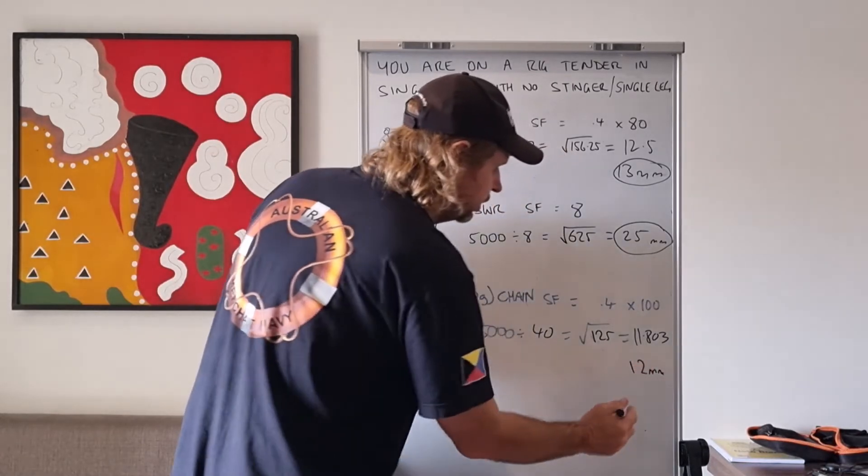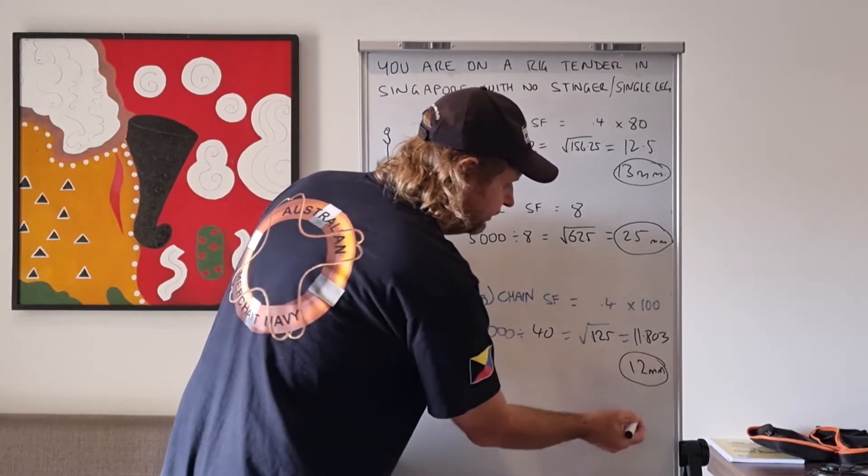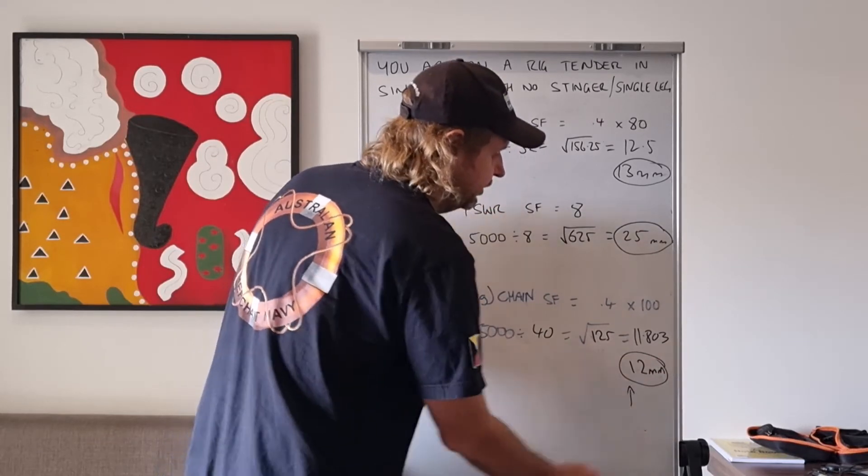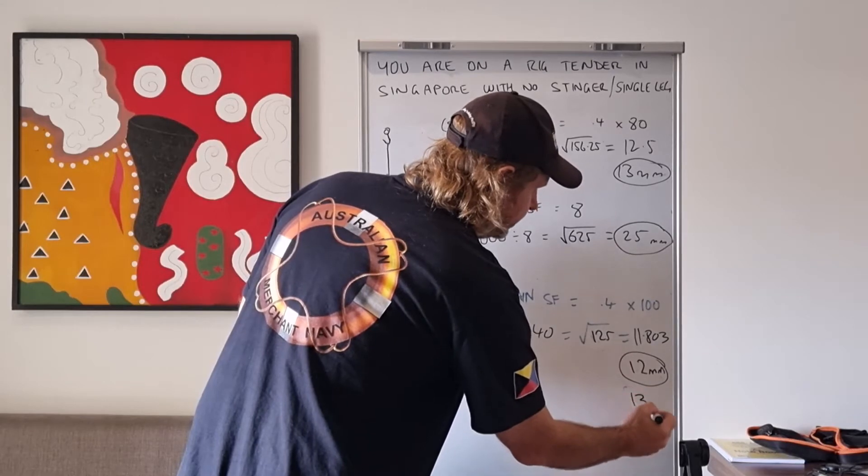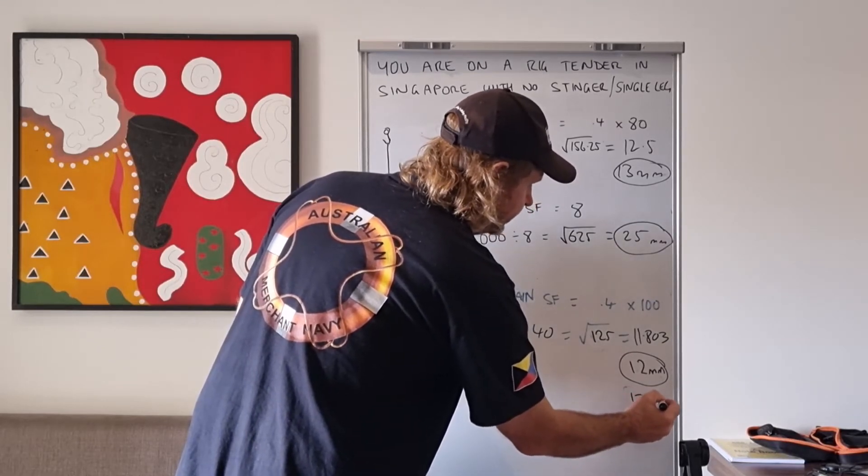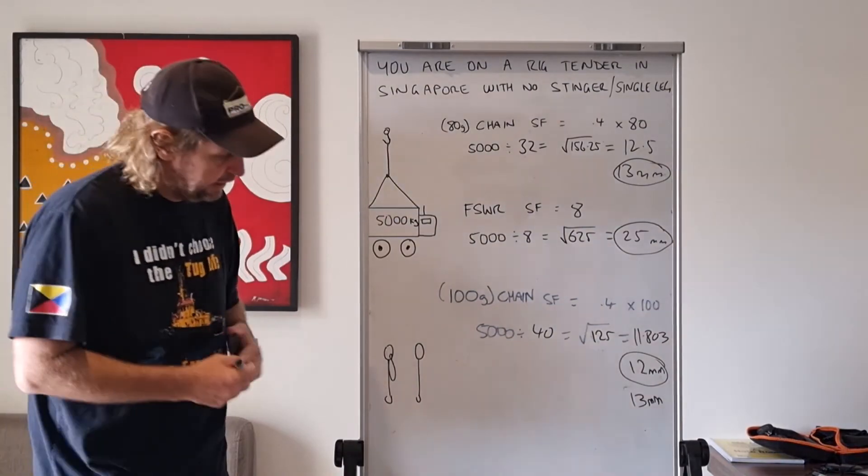And that would be more like 13 millimeter. Well, that's the answer there, but you'd have to say, have you got anything larger than 12 millimeter? And they would probably say, yeah, we've got some 13. So that's the way you work out what size sling or single leg sling or stinger that you need to put in here to lift that safely.